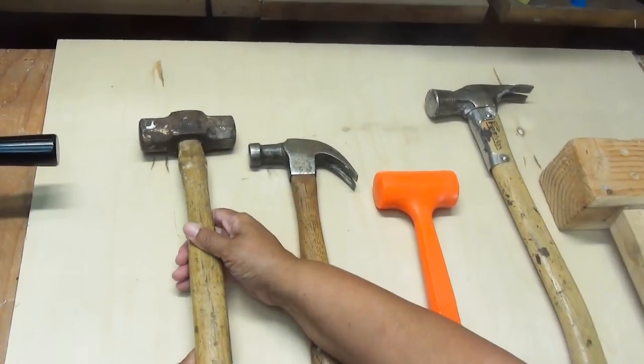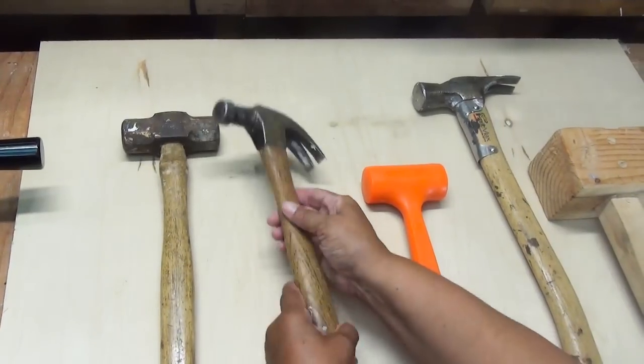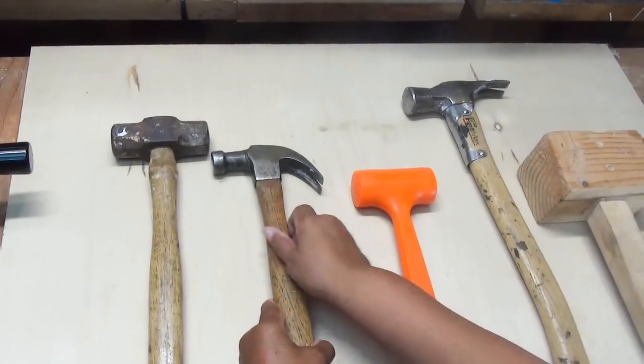Now I have an assortment of mallets and hammers. That was a sledgehammer. This here, that's a claw hammer. It's very common.